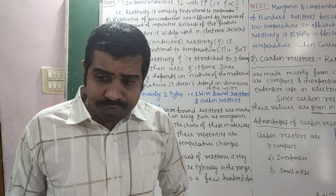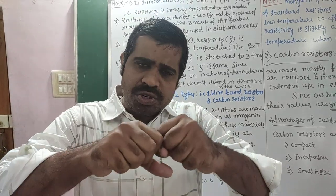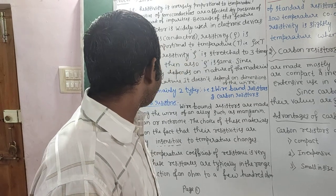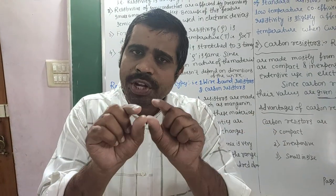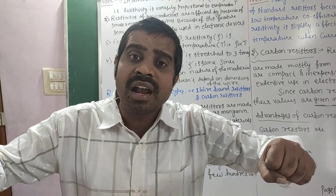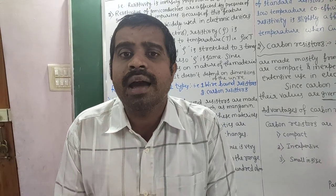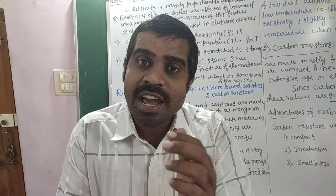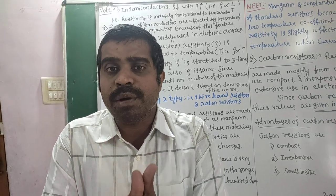Consider a copper wire of initial length 10 cm. If you stretch it to 30 cm — three times its original length — what happens to resistivity? Resistivity remains the same, because we are not changing the material, only its dimensions. Resistance (capital R) will change, but resistivity (ρ) remains the same.